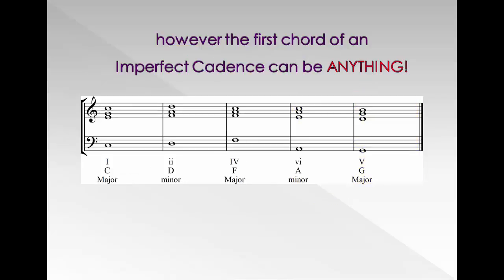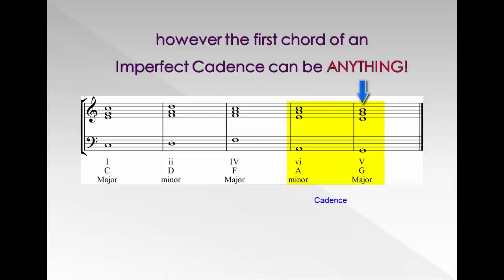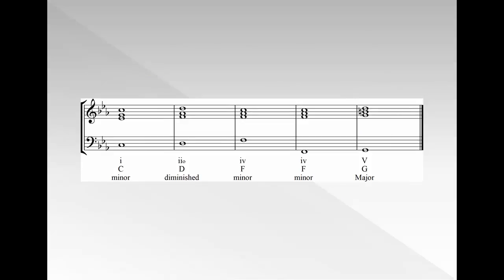However, the first chord of an imperfect cadence can be anything. Here is an example with chord VI followed by chord V in a major key. And here is an example of an imperfect cadence in a minor key using chord IV followed by chord V.